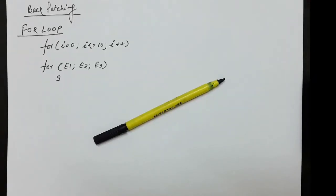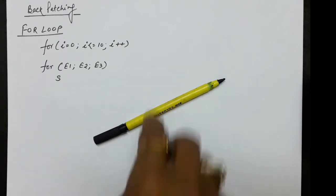Hello everyone. Continuing with our discussions on intermediate code generation and backpatching, let us now see how three-address codes can be written for the for loop.